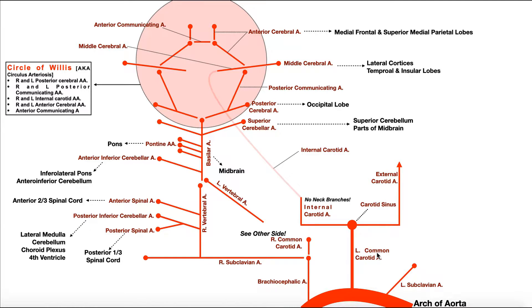The common carotid arteries, regardless of left or right, bifurcate near the carotid sinus into two arteries. There's the external carotid artery, which goes outside the cranium and serves structures superficial to the skull, and the internal carotid artery, which goes into the cranium and will eventually produce parts of the circle of Willis. Both common carotid arteries bifurcate into an external and internal carotid artery.